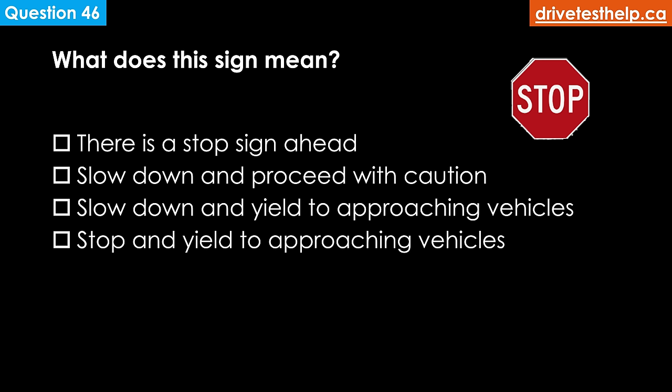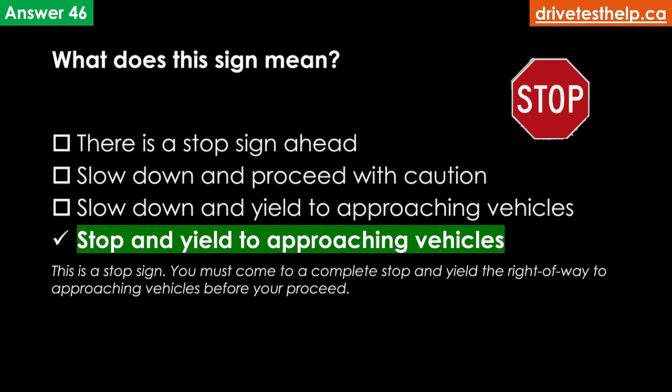What does this sign mean? Options: there is a stop sign ahead; slow down and proceed with caution; slow down and yield to approaching vehicles; stop and yield to approaching vehicles. The correct answer is stop and yield to approaching vehicles. This is the stop sign — you must come to a complete stop and yield the right of way to approaching vehicles before you proceed.